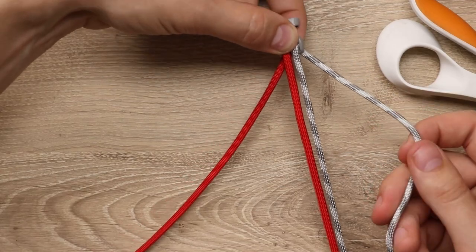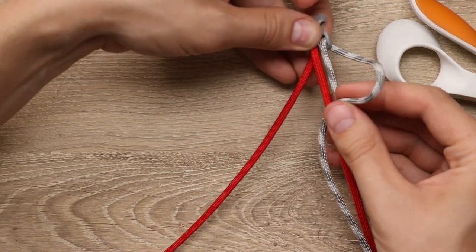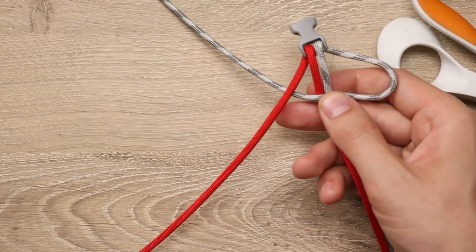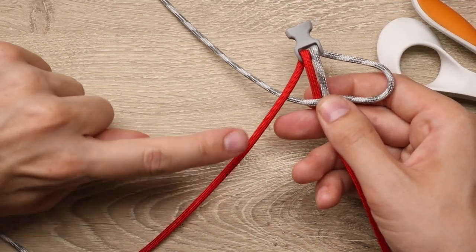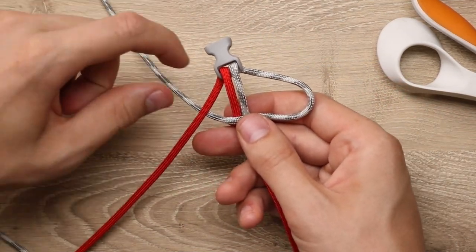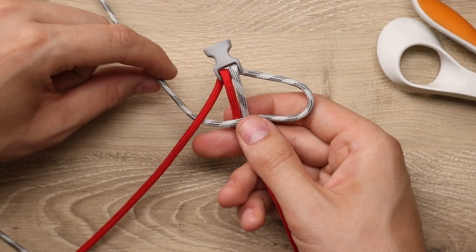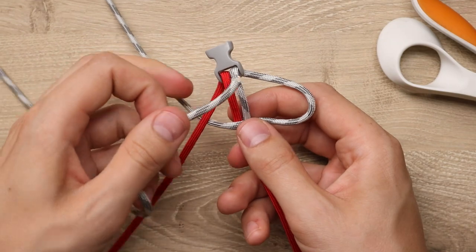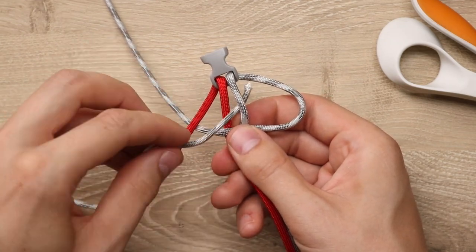Then I'm just going to take one cord and bring it over the top, just like I would with a cobra bracelet, and then go underneath that other color. But then instead of bringing this cord around the back, we're going to bring the same color that we just crossed over over the top of both red cords to go down through the middle right here.